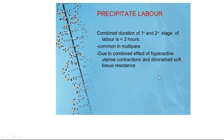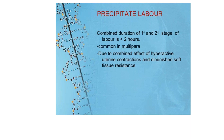Precipitate labor is exactly the opposite of inertia, where the combined duration of the first and second stages of labor is less than two hours. The mother expels the baby in two hours, which is mostly seen in grand multipara — someone who has delivered more than five viable fetuses before. This is both because of hyperactive uterine contractions and diminished soft tissue resistance, since in a multipara the pelvic floor muscles have become very soft and do not offer resistance.